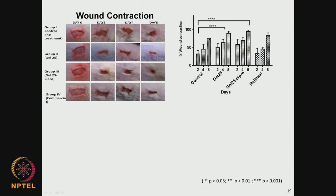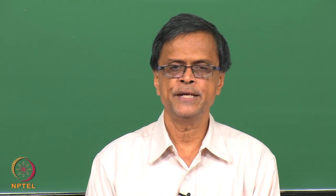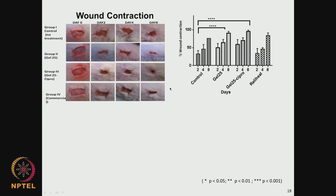The wound contraction after 8 days in the control is only 60-70 percent, whereas it is almost 100 percent - the wound is completely healed. This particular hydrogel seems to work reasonably well and this type of experiment has to be carried out using animal models - without that one could not go further for testing on humans.